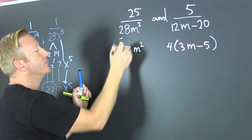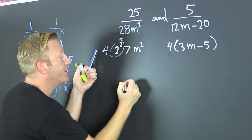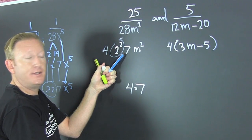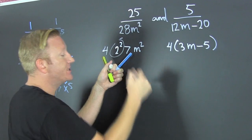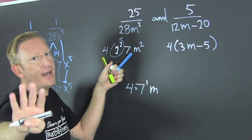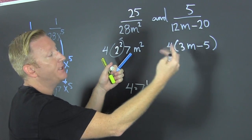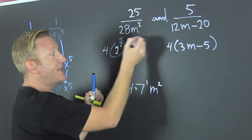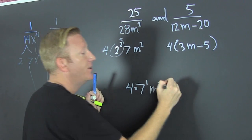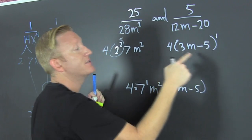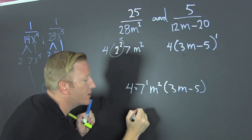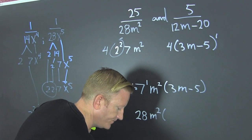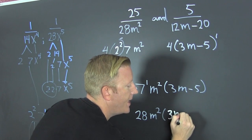They both have one four, so let's put a four in there. A seven is going to be in there — which one has more sevens? This one — it has one. And M is going to be in there — M squared, because that's the greatest number of M's. Then we have a three M minus five, because this one has one three M minus five. So our common denominator is 28 M squared times three M minus five.